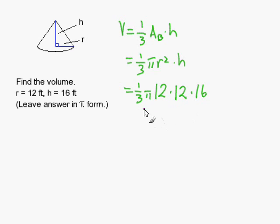So I get one-third times 12 is 4, times 12, times 16. Next I'm going to multiply 4 times 12 to get 48.